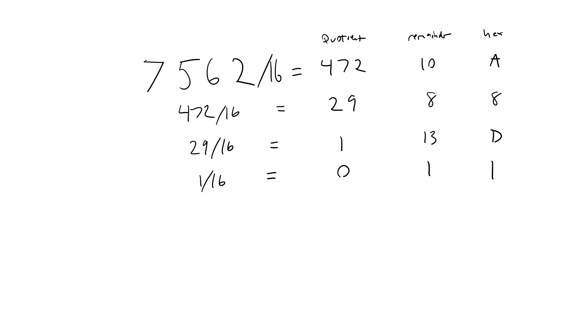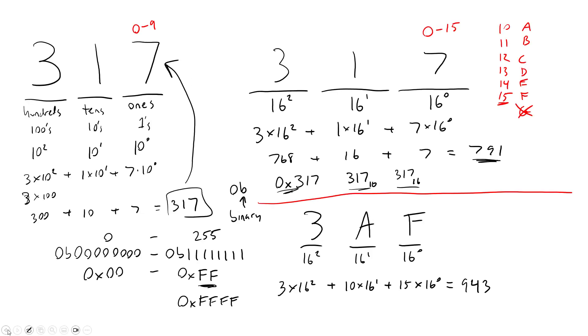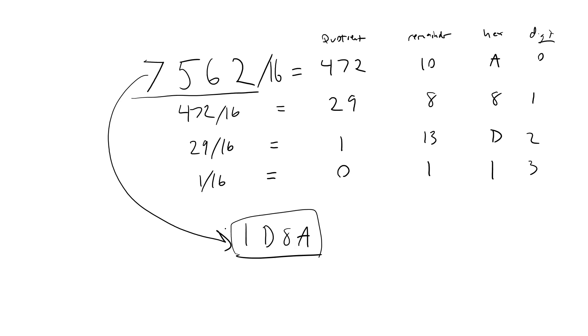And now these remainder hex values are in reverse order. So this is digit 0, 1, 2, 3, counting from the right. So to write that out in hex, it would be 1, D, 8, A. There we go. I have converted my original decimal value to hex. And if I wanted to convert this back to the decimal value, I could follow the process I did on the previous slide, multiplying each digit by the corresponding powers of 16, adding them up. And I should be able to complete the circle and get back to the equivalent decimal value.